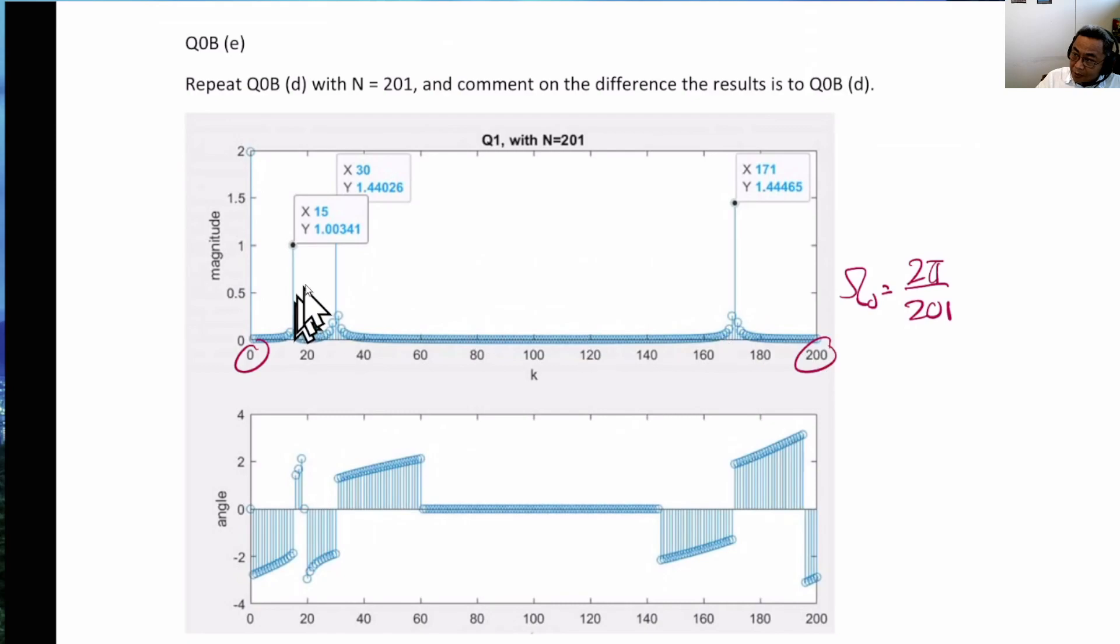And in this particular case, the required 0.15 pi as well as 0.3 pi would not land exactly at any integer value of k omega naught. So it will land very close, but it will not land exactly.